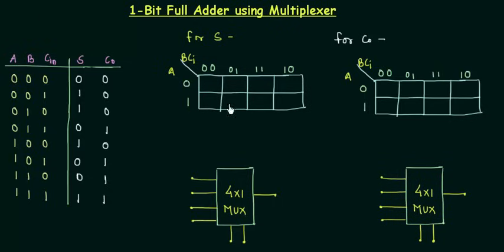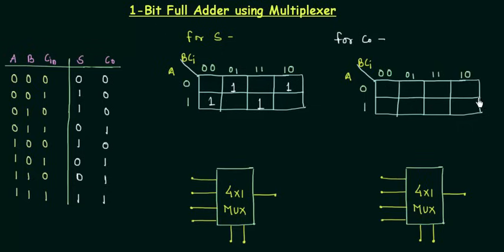The next step is to fill the cells depending on the truth table values. For the Sum K-map: 0, 1, 1, 0, 1, 0, 0, 1 — a checkerboard configuration. For the Carry Output K-map: 0, 0, 0, 0, 1, 0, 1, 1, 1. We will do the groupings later.